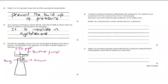Moving on to part G, a sample of cyclohexene has been contaminated with cyclohexanol. The cyclohexene can be separated by column chromatography. Silica gel is used as the stationary phase and hexane as the mobile phase. Why would cyclohexene have a shorter retention time than cyclohexanol?